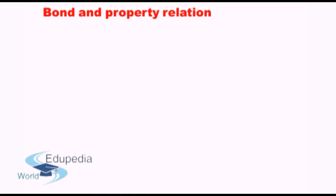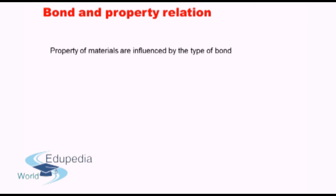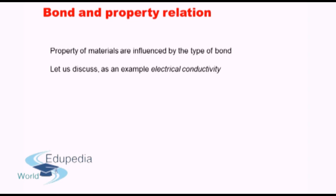To briefly summarize, we have three kinds of primary bonds: ionic bonds, which are formed by transfer of an electron from one atom to another; covalent bonds, which are formed by sharing of electrons; and metallic bonds, which occur in metal systems where atoms give up their valence electrons into a sea of electrons. The property of a material is highly influenced by the type of bond — something with a strong bond will require a lot of energy to melt.